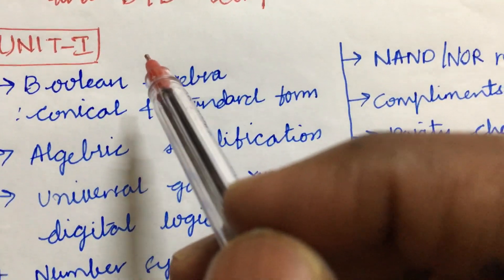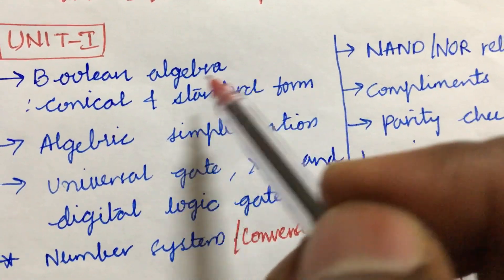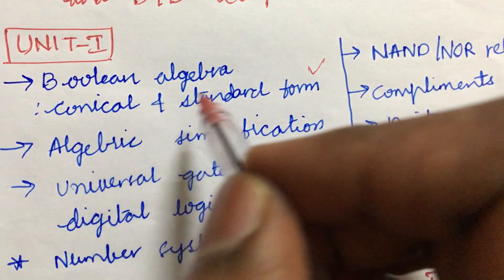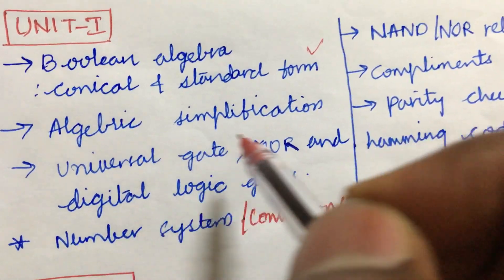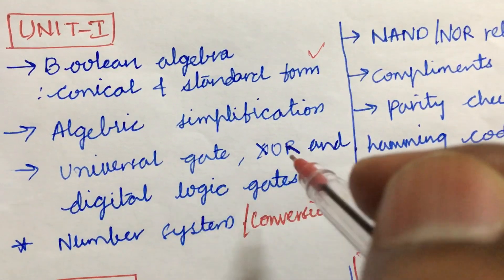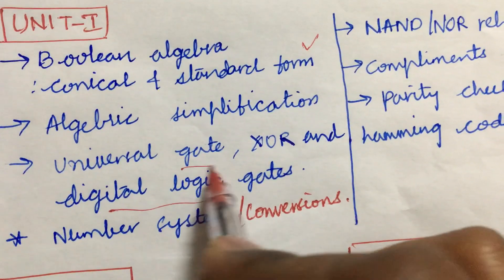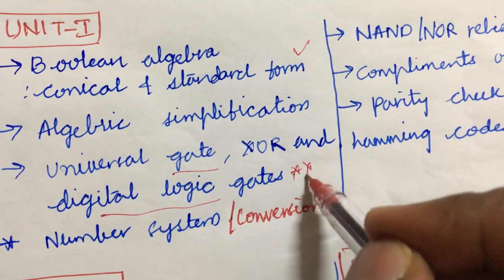Later, let's look into the Unit 1 questions. It is all about Boolean algebra, the canonical as well as standard form. As per the COVID pattern, you are going to get two questions from this. Algebraic simplification, universal gate, XOR gate, and digital logic gates and their comparisons may also be one of the very important questions.